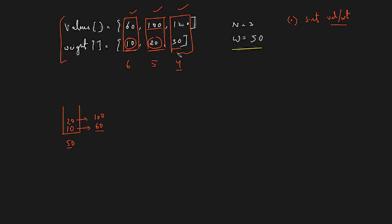For the third item, our tendency is to pick all 30 weight, but we've already picked 30 weight and the knapsack capacity is 50, so only 20 weight remains. Since fractional picking is allowed, we pick 20 weight of this item. The value per weight is 4, so 20 weight gives value 80. We add 80 to our answer and break, since the knapsack is full.